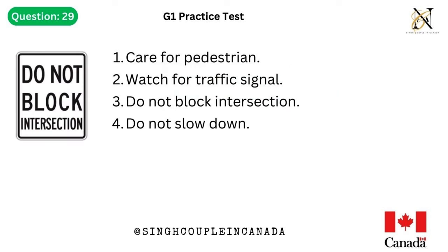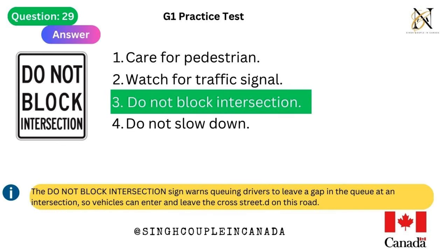Question 29. This traffic sign means: 1. Care for pedestrian. 2. Watch for traffic signal. 3. Do not block intersection. 4. Do not slow down. Answer is 3. Do not block intersection. The do not block intersection sign warns queuing drivers to leave a gap in the queue at an intersection, so vehicles can enter and leave the cross street on this road.